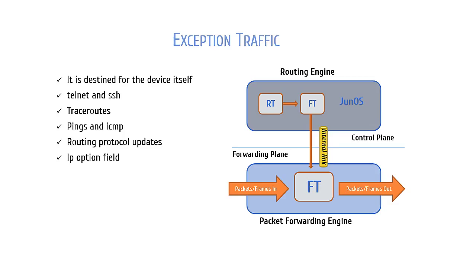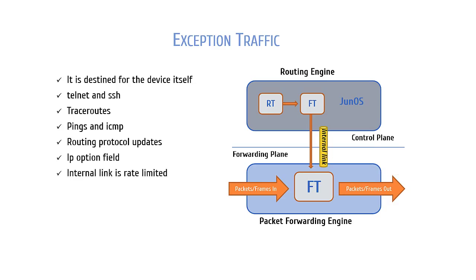When the routing engine receives exception traffic, it sends it down to the PFE via the internal link we talked about earlier. It's worth noting that Junos rate limits this kind of traffic over the internal link to protect itself from denial of service attacks. If there was no rate limiting on this sort of traffic over the internal link, then a denial of service attack could flood the device with exception traffic and crash the routing engine. This is just a built-in feature, and it's not actually something that you can configure.